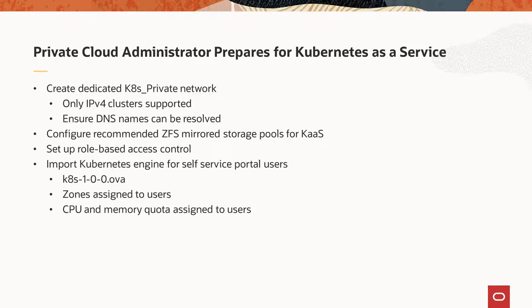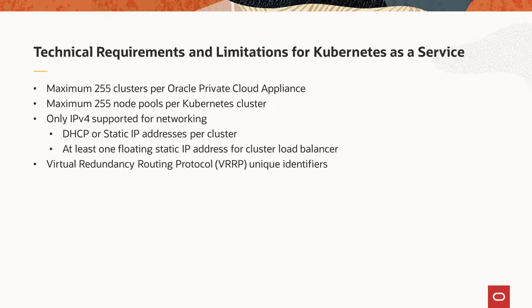Zones, CPU, and memory quota are assigned to users by the Private Cloud administrator. A maximum of 255 Kubernetes clusters can be created in one Oracle Private Cloud Appliance, and one Kubernetes cluster can support up to 255 node pools. A Kubernetes cluster requires at least one static floating IPv4 address for the load balancer, regardless of whether the cluster nodes use DHCP or static IP addresses. Only one static IP address is required for a DHCP cluster. A Kubernetes cluster with a static network type requires static IPv4 addresses for all its nodes, and all addresses must be resolved by DNS.